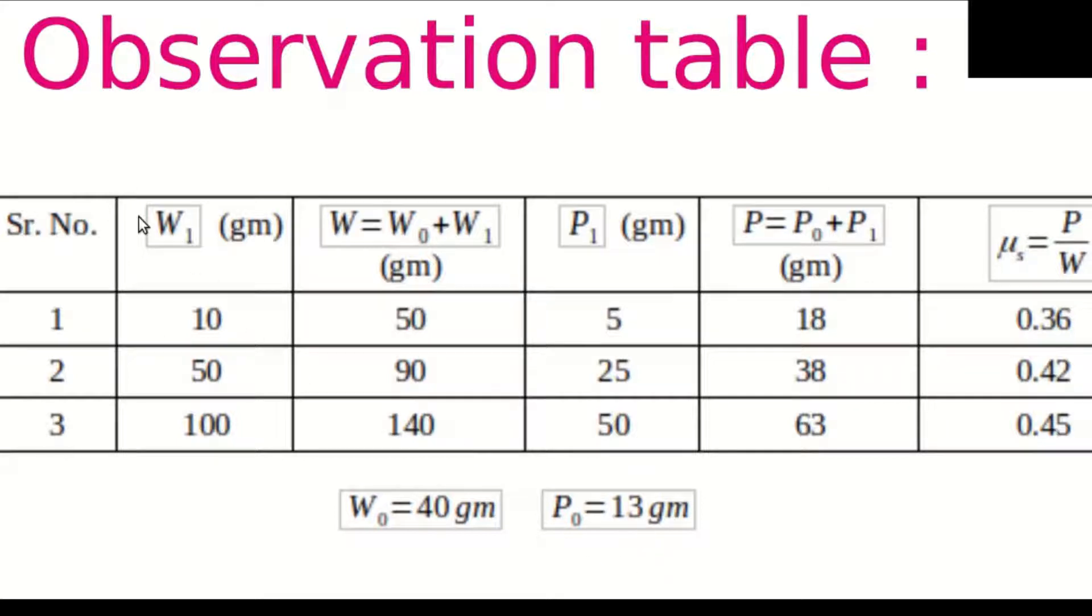We have given that the weight of empty wooden block is 40 grams. We have to add W₁ plus 40 to get total weight of wooden block. So, we will add 40 in all three columns: 10 plus 40 is 50, 50 plus 40 is 90, 100 plus 40 is 140.